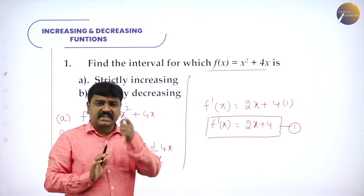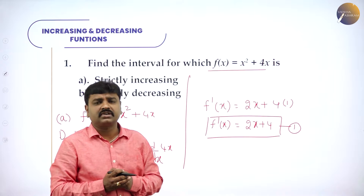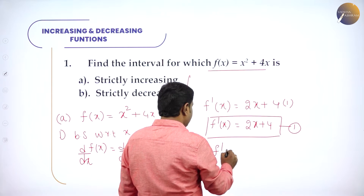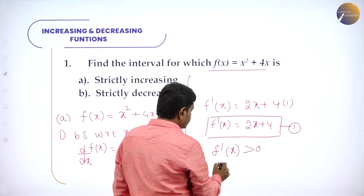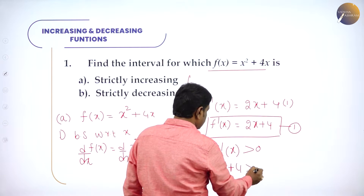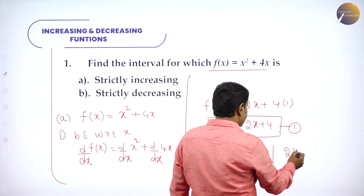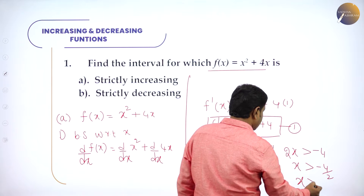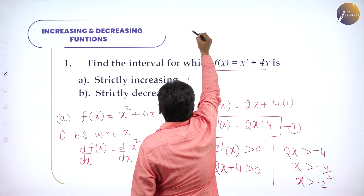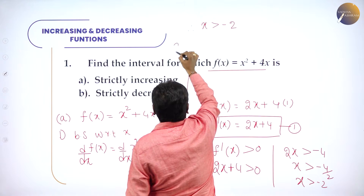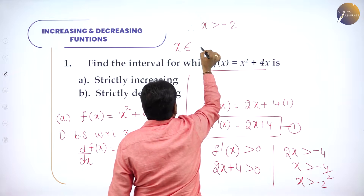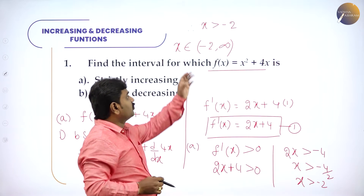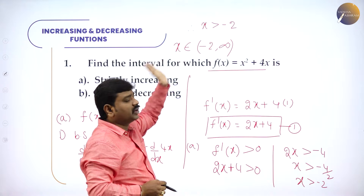Now we need to find the interval for strictly increasing. The condition for strictly increasing is f'(x) greater than 0. So f'(x) greater than 0 means 2x + 4 greater than 0, that is 2x greater than minus 4, that is x greater than minus 4/2, so x greater than minus 2. Therefore x belongs to (−2, +∞).